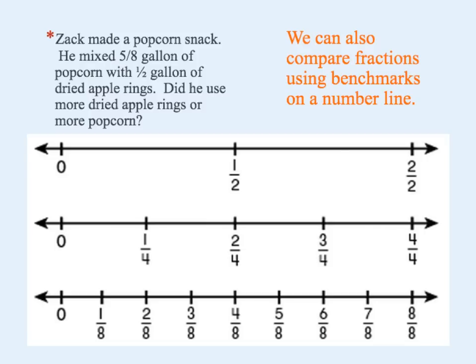Another way to compare fractions using benchmarks is by using a number line. Going back to that same problem: he has five-eighths gallon of popcorn and one-half gallon of dried apple rings. I can see right here one-half on the number line — I'm going to put an X there — that's how much he has in apple rings. Remember what you know about equivalent fractions: one-half is the same thing as two-fourths,